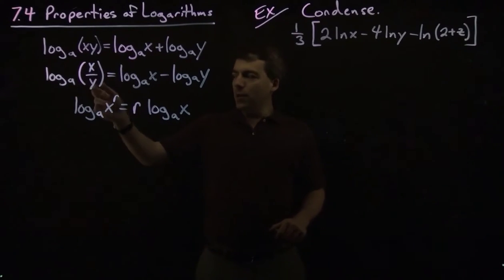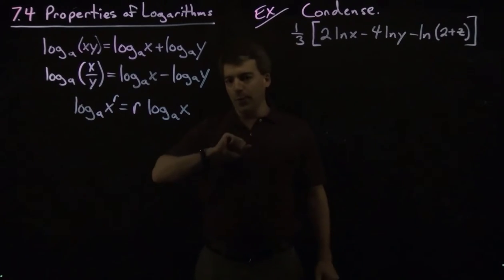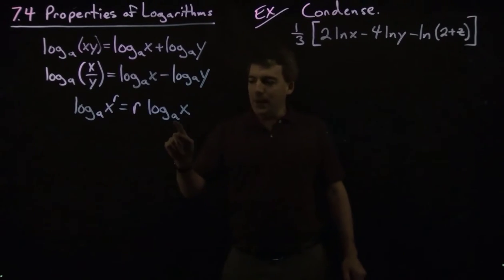Log base A of x over y is log base A of x minus log base A of y. And then we have this power rule, the most important one: log base A of x to the r equals r log base A of x.